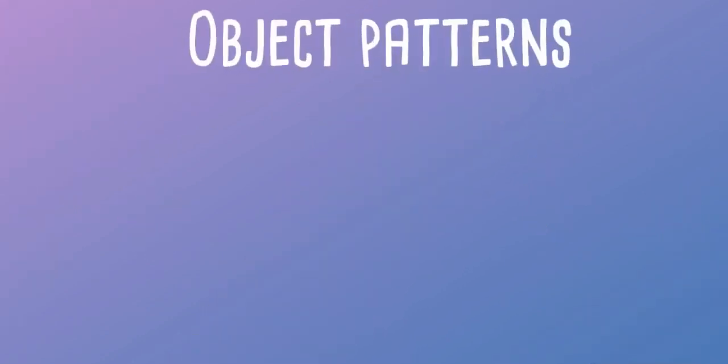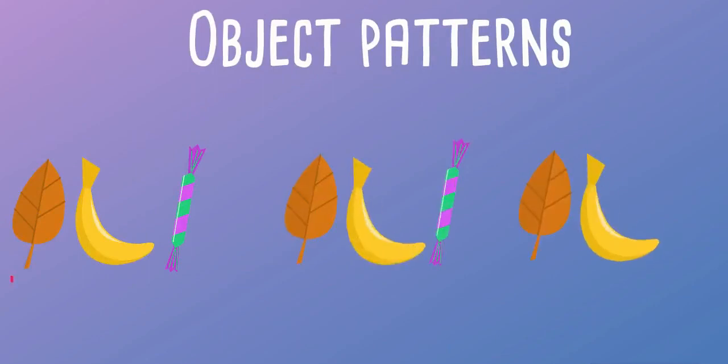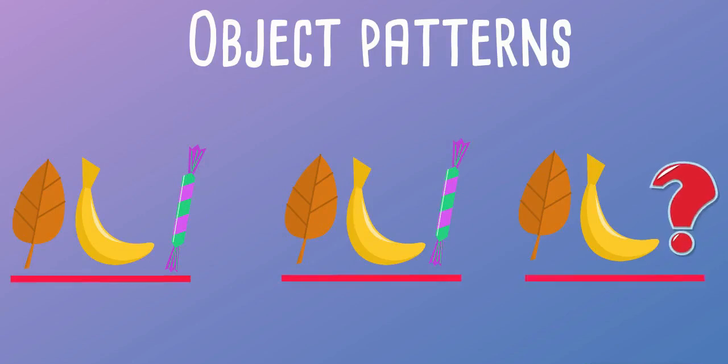We have another example. The repeating part of the object pattern is a leaf, banana and candy. The next object that comes after banana will be a candy.